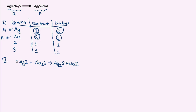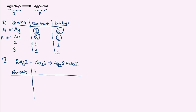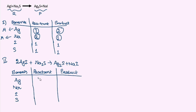Let us again analyze this with the table. Elements: Ag, Na, I, and S. Ag now has two atoms in the reactant and two atoms in the product. Sodium has two atoms in the reactant side and one atom in the product. Iodine has two atoms in the reactant and one atom in the product. Sulfur has one atom and one atom. Now, sodium has a mismatch — 2 and 1 — and iodine also has a mismatch — 2 and 1. Sodium is a metal and iodine is a non-metal, so preference should be given to sodium first.